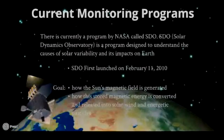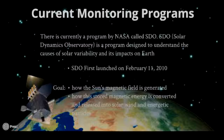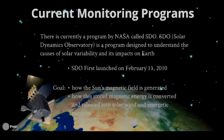There is currently a program by NASA called the SDO, which stands for the Solar Dynamics Observatory. This is the first mission to be launched for NASA's Living with a Star program — a program designed to understand the causes of solar variability and its impacts on Earth. SDO was first launched on February 11, 2010. Its goal is to understand how the sun's magnetic field is generated and structured, and how this stored magnetic energy is converted and released.